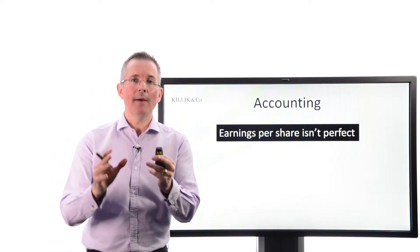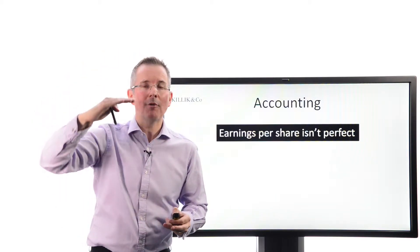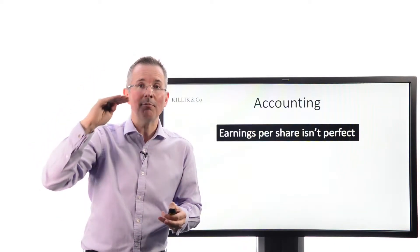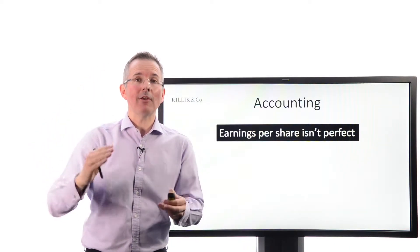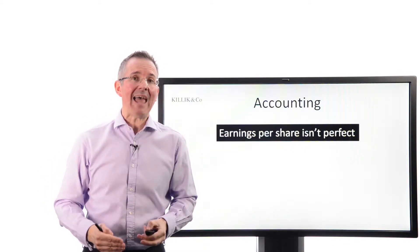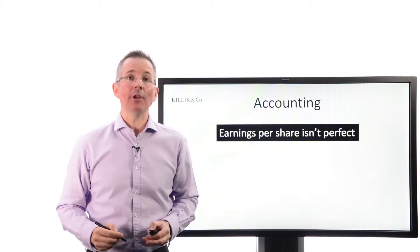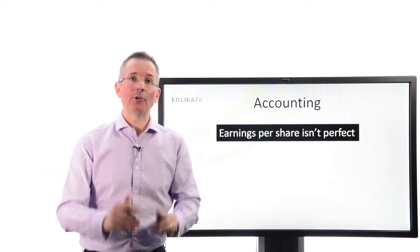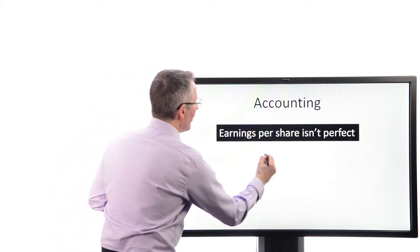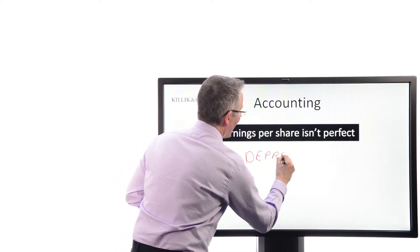A price earnings ratio uses earnings per share, and the earnings figure is the one quite a long way down a profit and loss account — it's the earnings figure for a company after lots of things have been deducted: the tax bill for the year, interest expense on debt, and a couple of quite subjective accounting numbers known as depreciation and amortization.